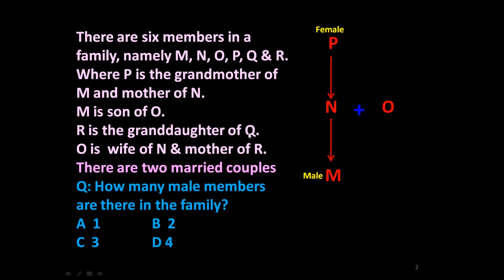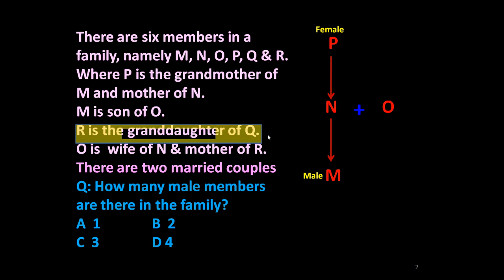R and Q have no other relationship given so far, making it difficult to incorporate them into the family tree at this point. Let us underline the statement 'R is the granddaughter of Q' and come back to it.